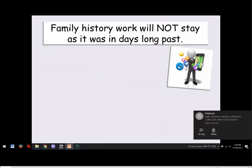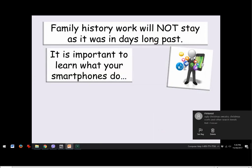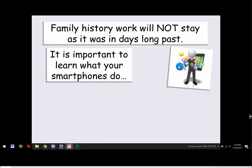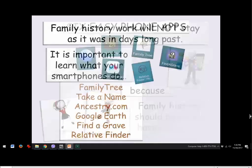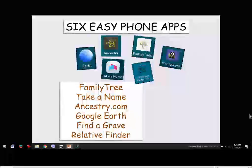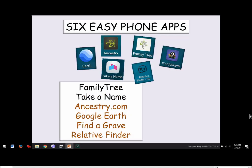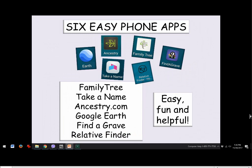Family history will not stay the same as it has in days past. Is it important to learn what your smartphones can do? Yes, because family history should be about having fun, not frustration. The six apps covered today are: Family Tree, Take a Name, Ancestry.com, Google Earth, Find a Grave, and Relative Finder. They're easy, fun, and helpful.